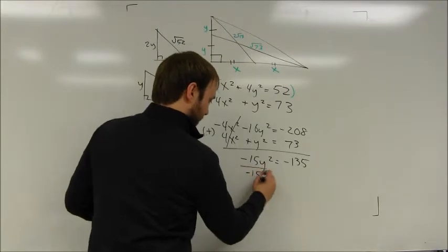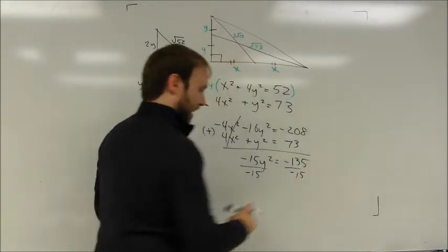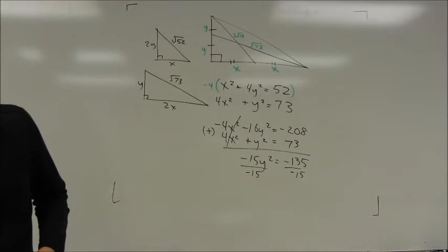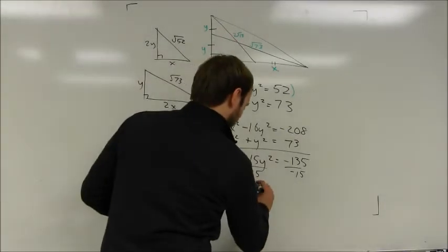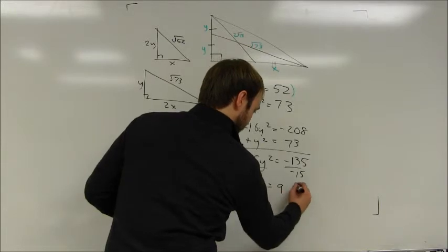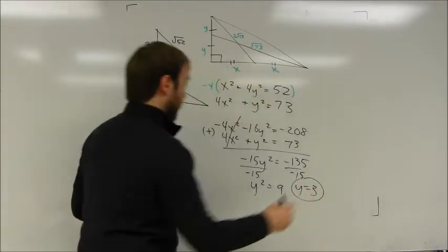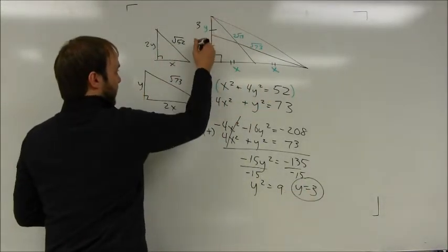I can divide both sides by negative 15. 135 divided by 15 is 9. I find out that y² is equal to 9, which of course means that y is equal to 3. Now I have those lengths there.